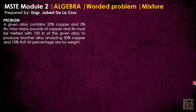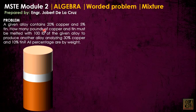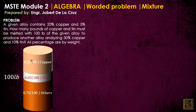Let's try another example. A given alloy contains 20% copper and 5% tin. How many pounds of copper and tin must be melted with 100 pounds of the given alloy to produce another alloy analyzing 30% copper and 10% tin? The given alloy is 100 pounds, composed of 20% copper, 5% tin, and the remaining 75% is other materials.